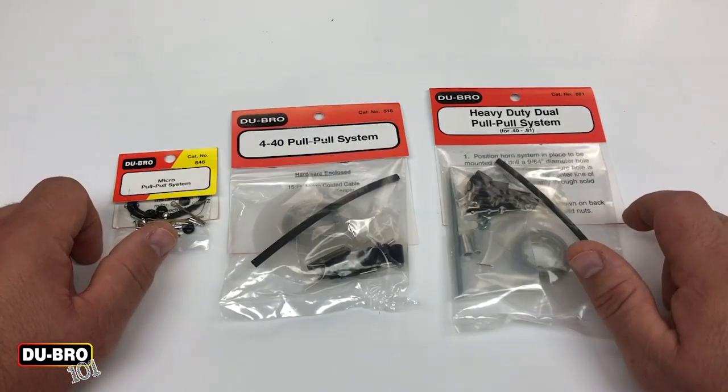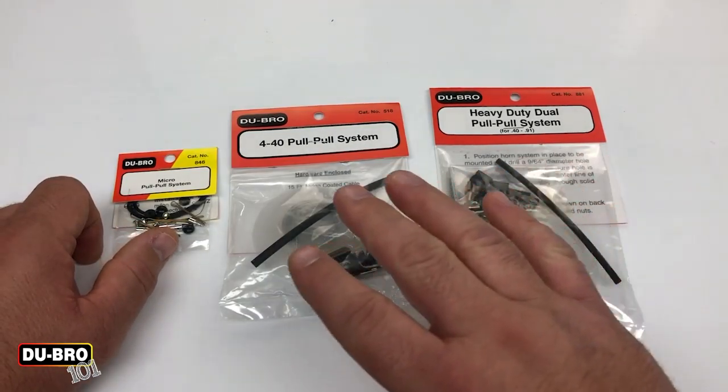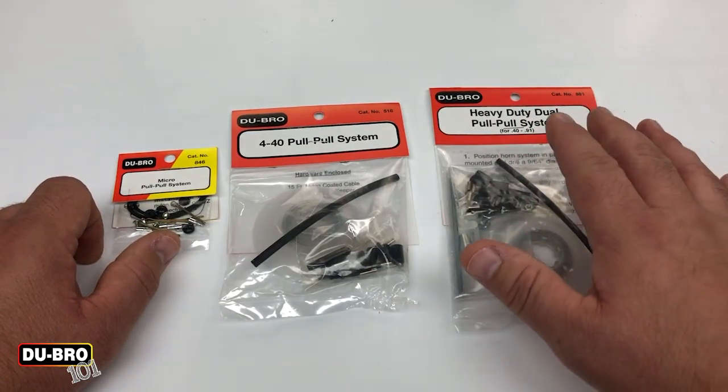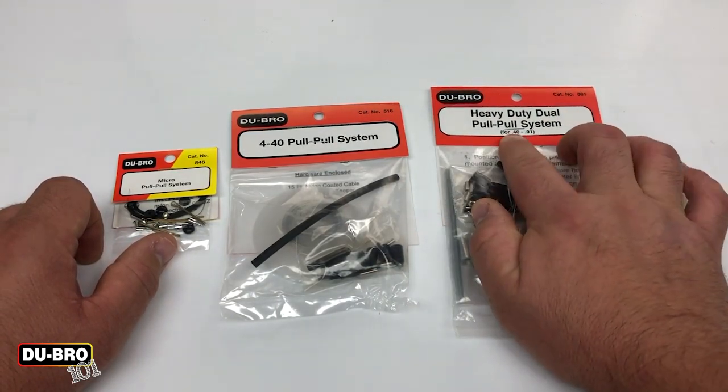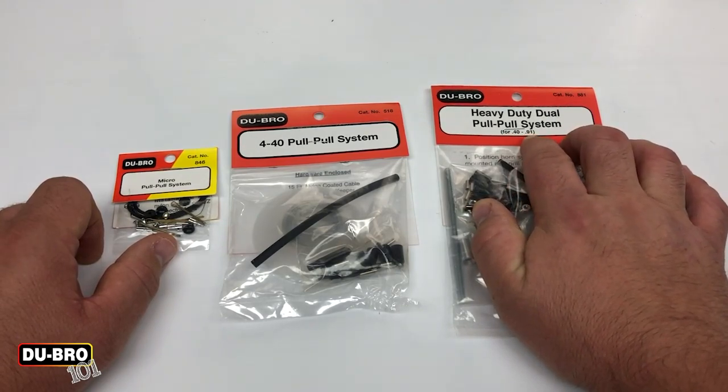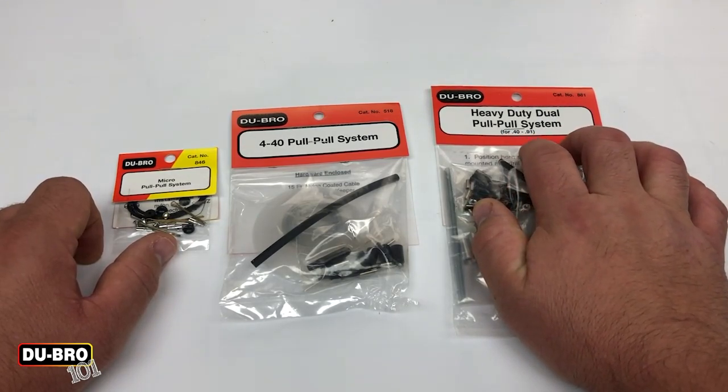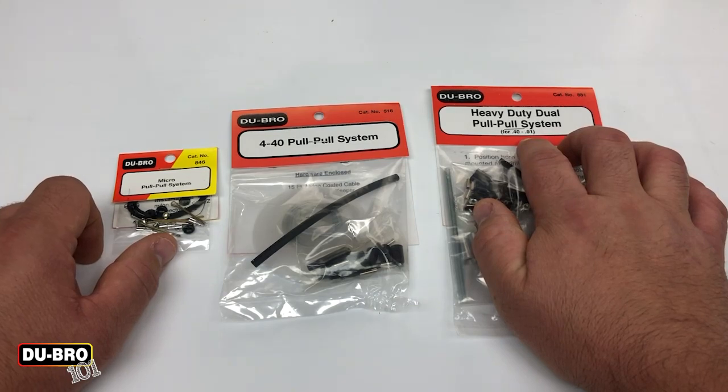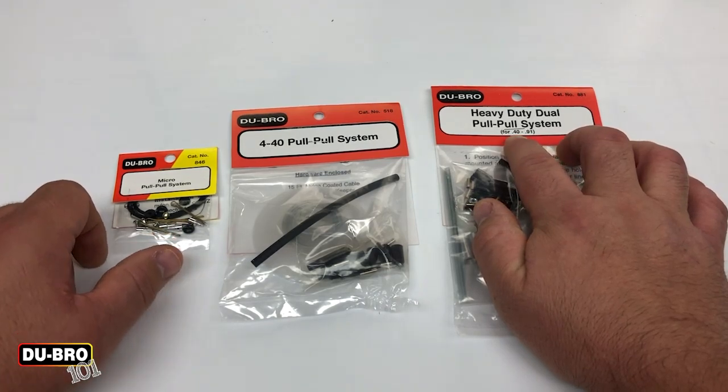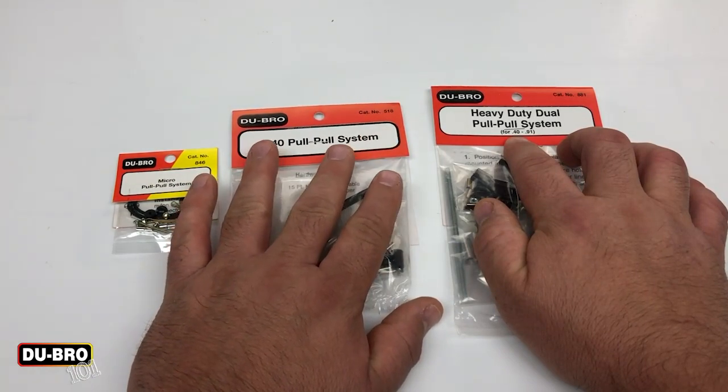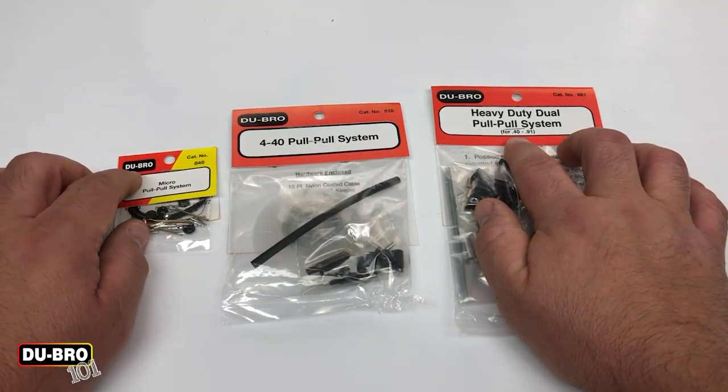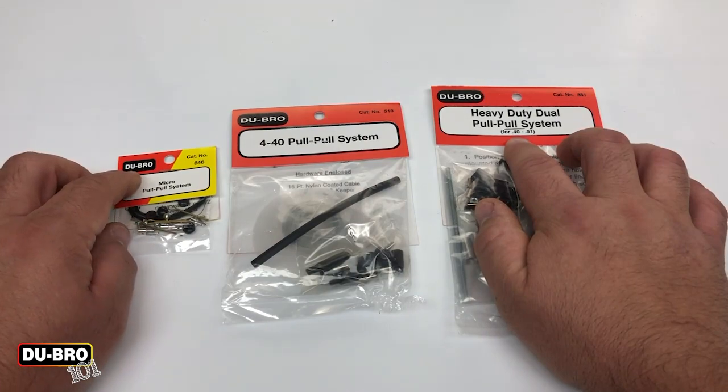Really, you should be selecting these based off of some experience and consulting with your local flying club. My best recommendation is that you try to stick with what Dubro recommends: the heavy-duty pull-pull system is recommended for 40 to 91 size. You can even use this on larger sizes too, but below 40 size I would definitely recommend the 440 pull-pull system, and then really tiny stuff you're going to be going with the micro pull-pull system just to keep things even lighter in your tail.